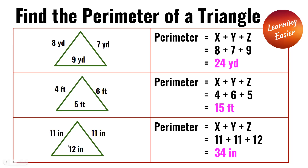In the third triangle, the side lengths are 11 inches, 11 inches, and 12 inches. 11 plus 11 plus 12 is 34 inches, and 34 inches is the perimeter.